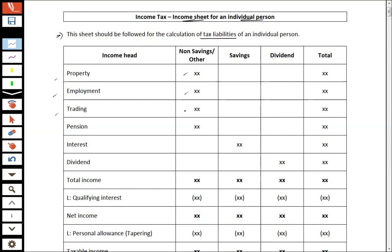Trading is also to be reported in the other income column, and the same treatment applies to pension. The third column is for savings — interest income is recorded in the savings income column, and dividend income received in a fiscal year is reported in the dividend column. By adding all of these you get your total income, from which you deduct the qualifying interest.